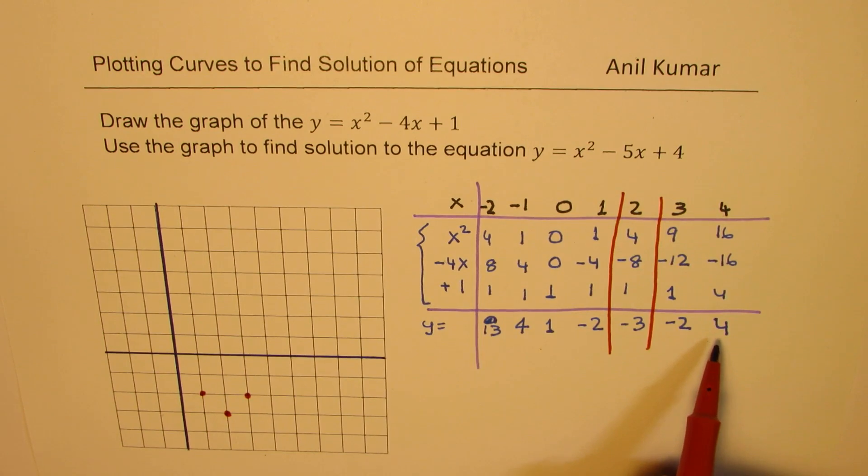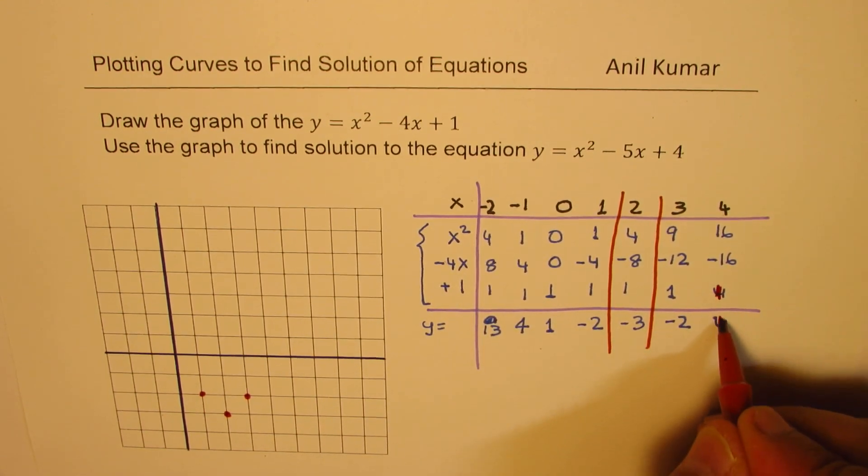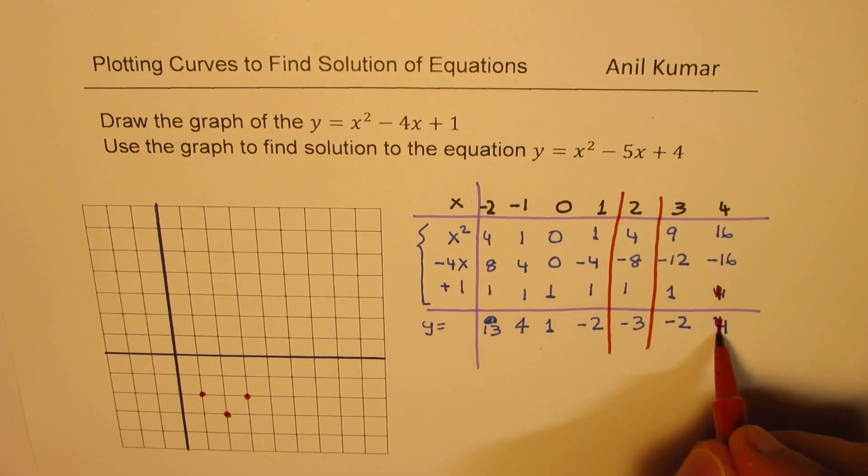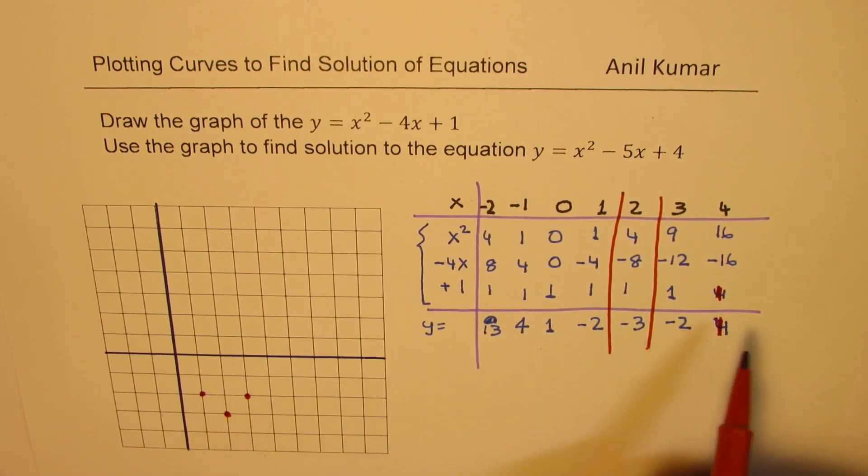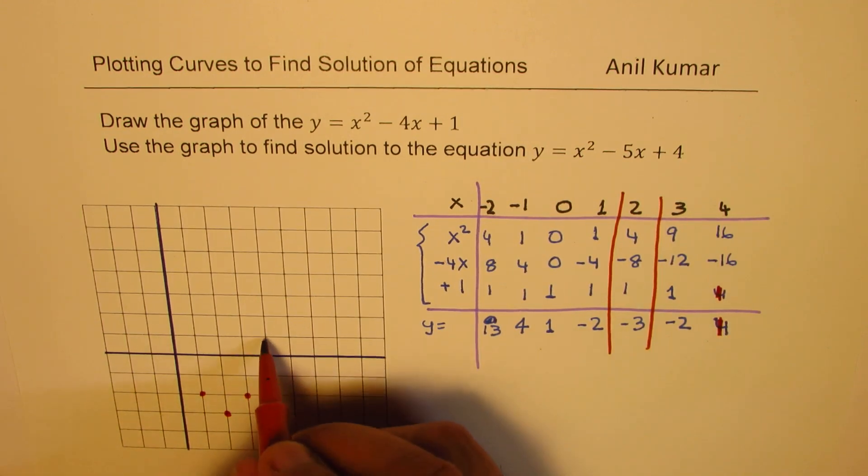And then we get a value for 4. 4 squared is 16. This 4 gives us 16 minus, sorry this was 1. That is what I was thinking. This is 1, right? So this will give me 1. It has to be 1. So the next value of 4 gives me 1.